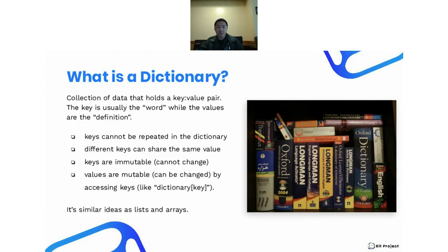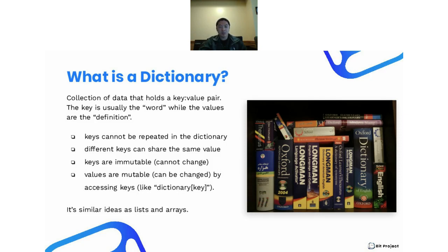Before we do that, let's go over some key Python concepts, the first of which is a dictionary. A dictionary is essentially a collection of data that holds a key-value pair. The key is usually the word, while the values are the definition. These keys cannot be repeated in a dictionary, similar to how in an actual dictionary you can't have the same word defined twice — you always have different, unique words. Similarly, keys in a dictionary cannot be repeated.